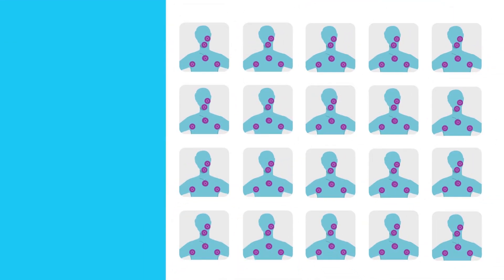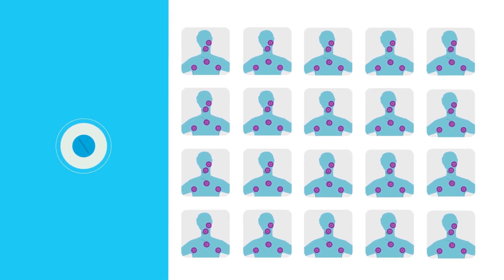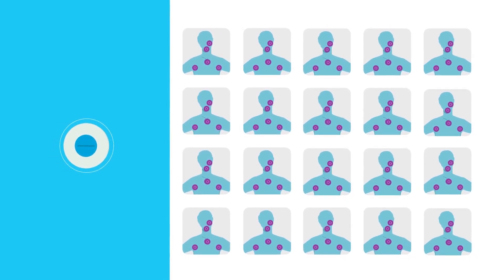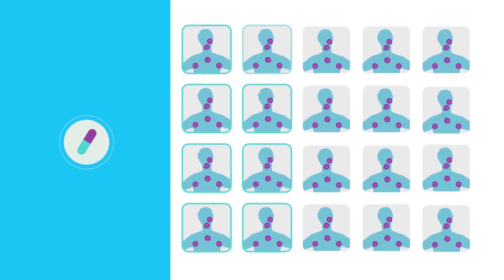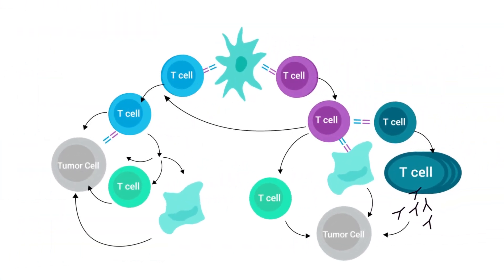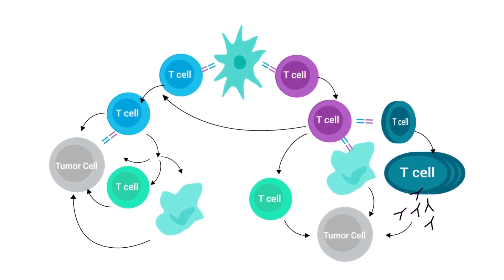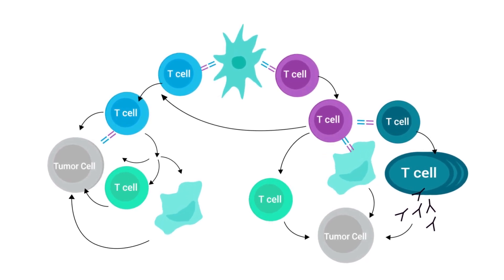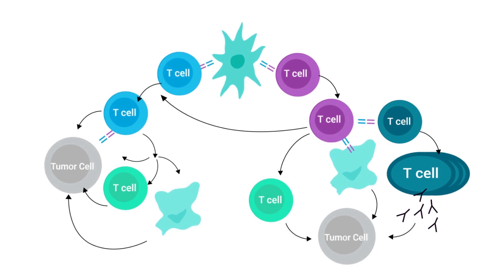But as the number and quality of immunotherapies explodes, the response rates for monotherapies remain between 20 and 40 percent. Why? Interactions between the immune system and cancer are complicated. There are several mechanisms in action at the same time.